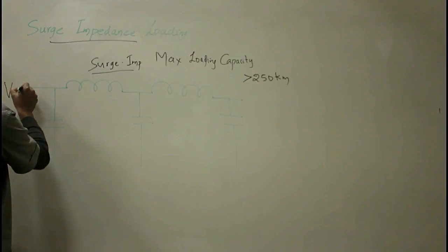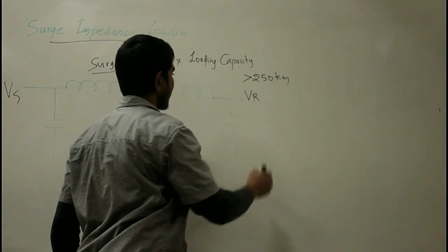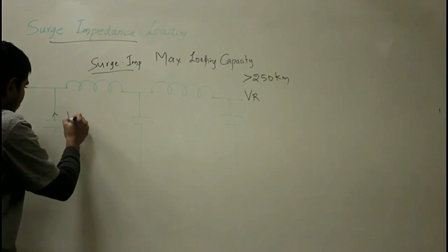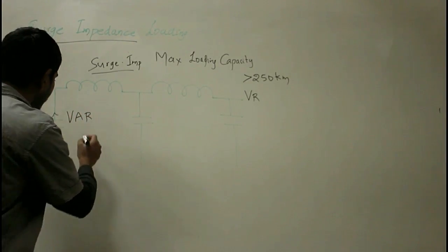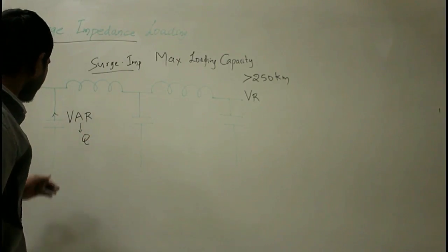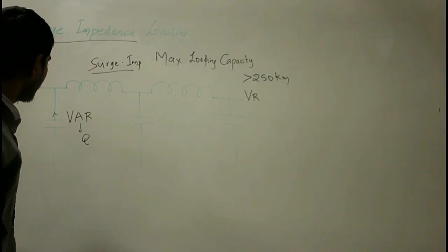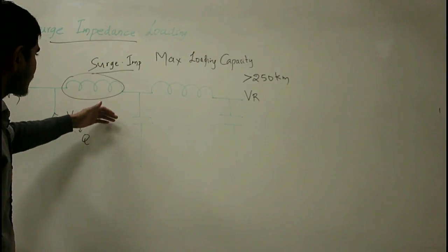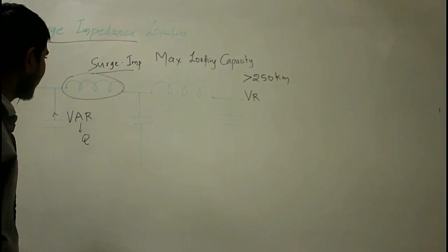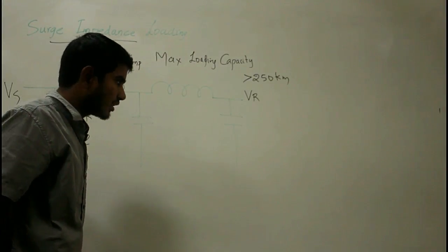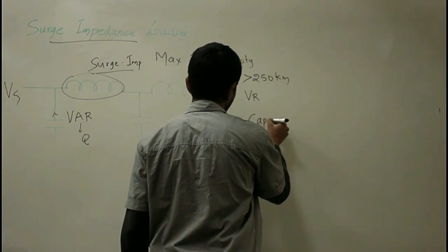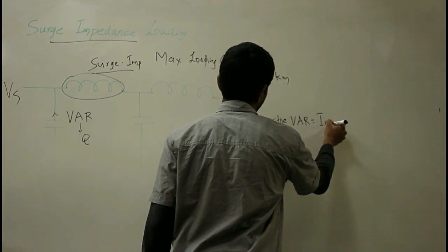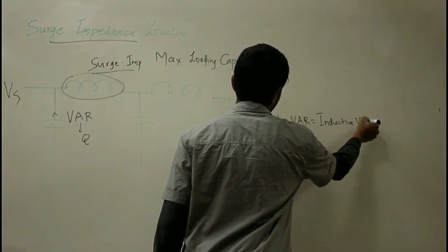When the line is charged, we have the sending end voltage Vs and the receiving end voltage VR. The capacitive component generates VAR (voltage ampere reactive), denoted Q. That VAR generated by the capacitor will be consumed by the inductive component of the long transmission line. If we balance the two reactive powers, we arrive at an equation.